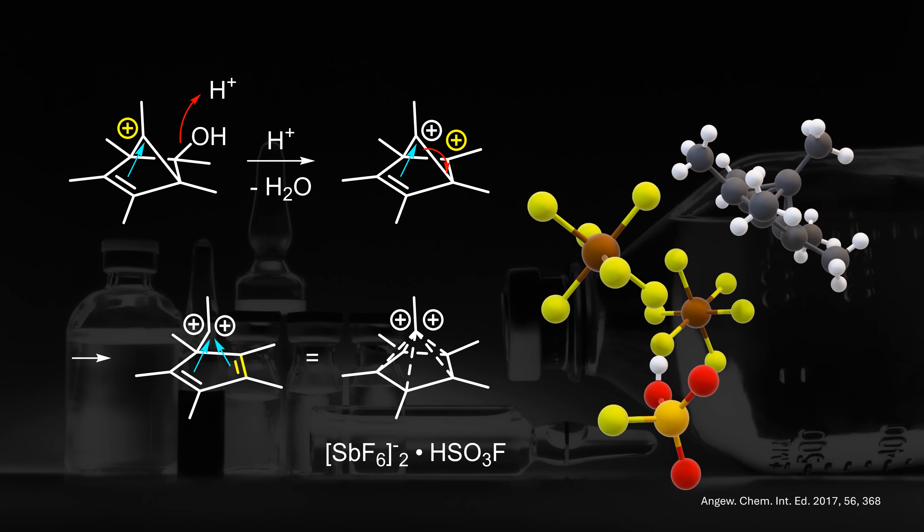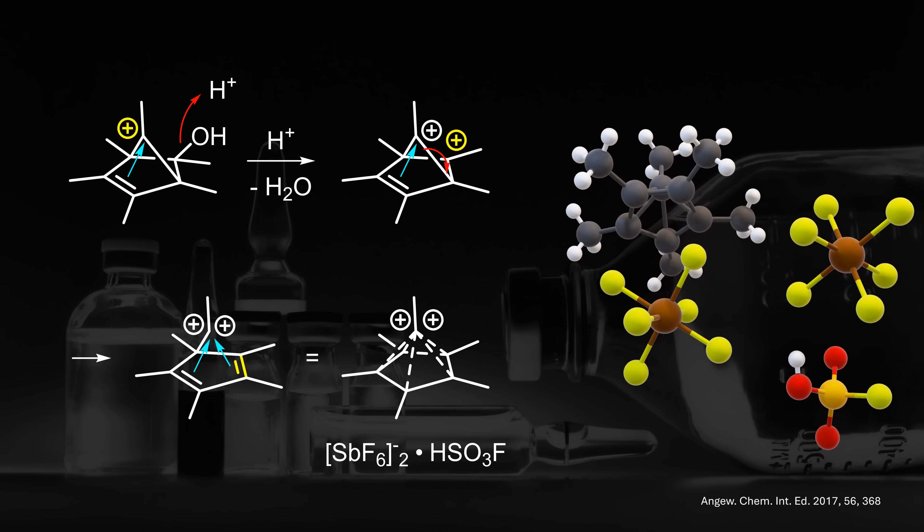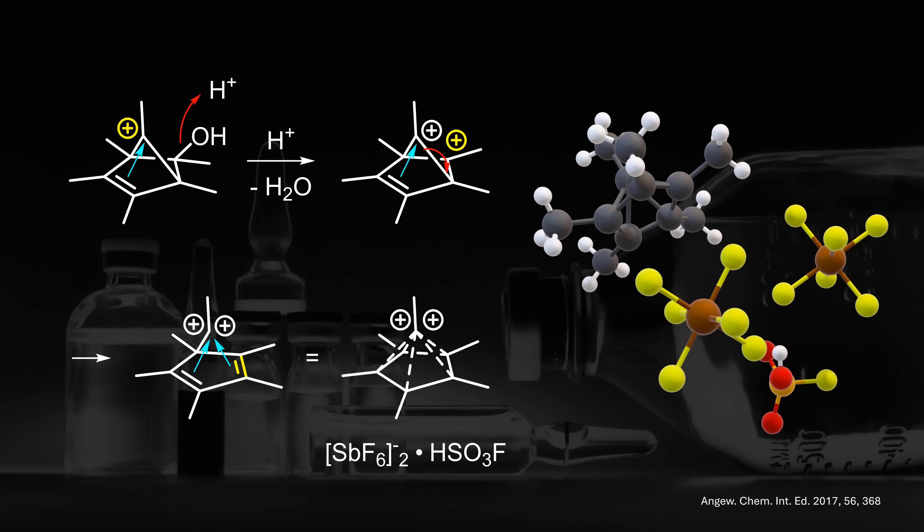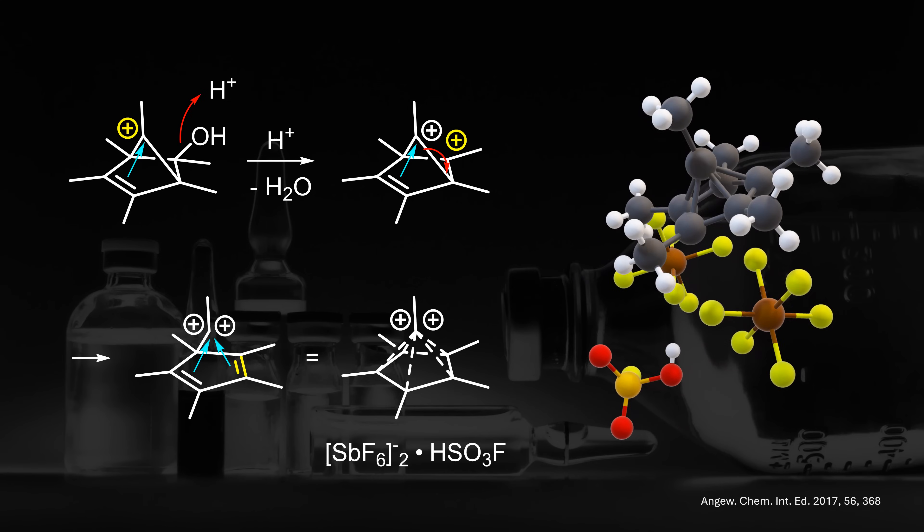This dication crystallizes with an entourage of two SbF6 anions and one molecule of fluorosulfuric acid. This complex is very unstable, but it was just enough to be characterized. Although the anions do engage in some hydrogen bonding with the methyl groups, we'll ignore them.